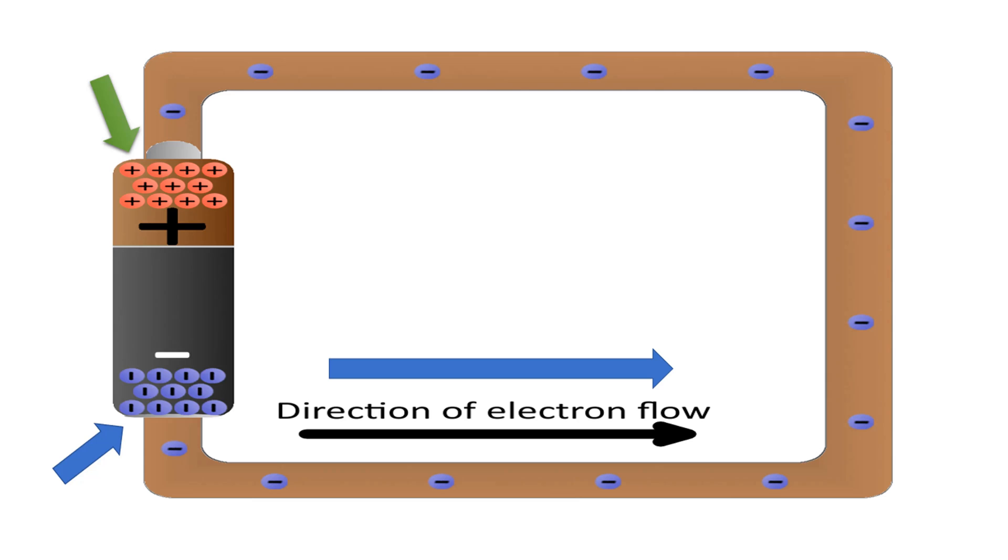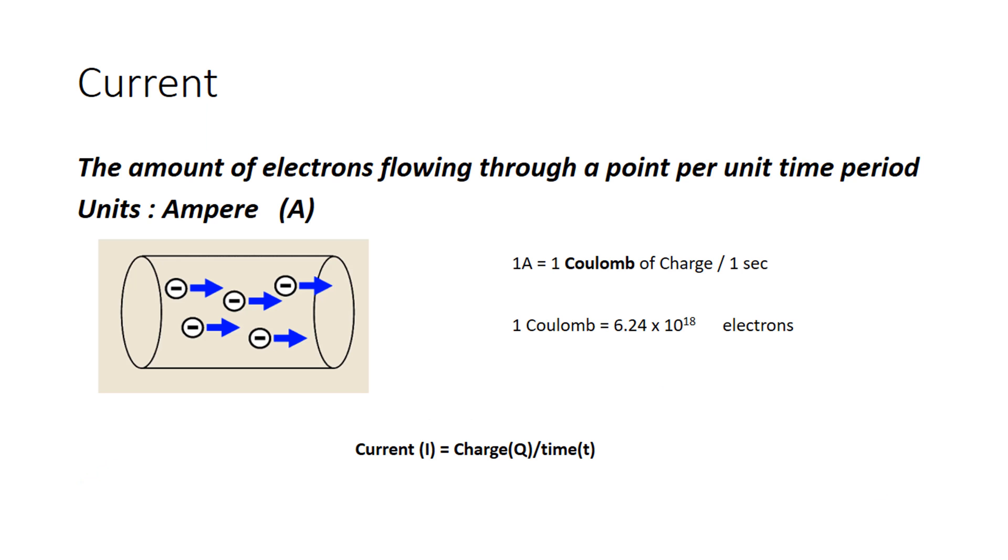Current is the amount of electrons flowing through a point per unit time period. The units are amperes, which we call amps. Here the electrons are charged and the units of charge are coulombs. 1 ampere is defined as 1 coulomb of electrons flowing through a point in unit time, that is 6.24 × 10¹⁸ electrons flowing through a point in unit time.